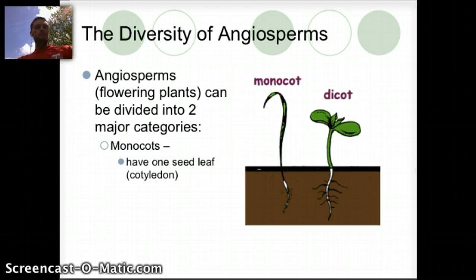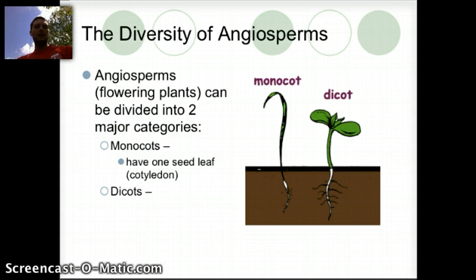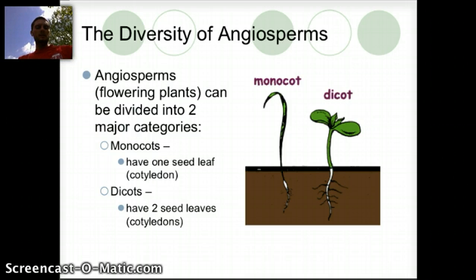Monocots specifically only have one seed leaf or cotyledon. Dicots, not surprisingly, have two seed leaves or cotyledons. So monocotyledons and dicotyledons either have one or two seed leaves in their seed.